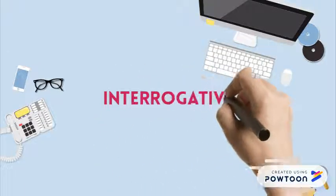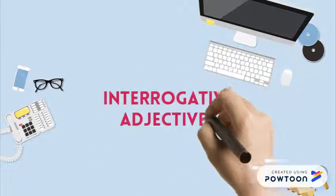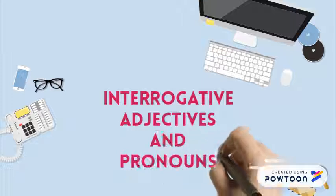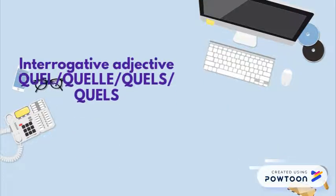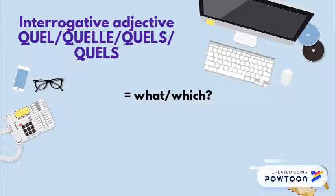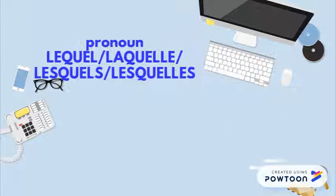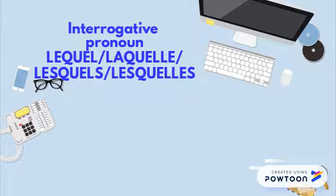Let's talk about interrogative adjectives and pronouns. You already know the interrogative adjective quel, which means 'what' or 'which.' For instance, quelle heure est-il ? — What time is it? The pronoun lequel can also be interrogative.